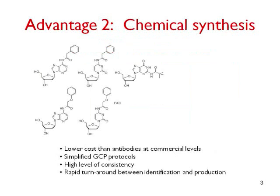Advantage 2. Aptamers are chemically synthesized. There is no need for cell lines or cell-based production of anything. We do not keep cell lines for aptamers — we maintain them as written-out sequences. Chemical synthesis means lower cost at a commercial scale, simplified good clinical practice protocol development, and a high level of consistency from lot to lot.